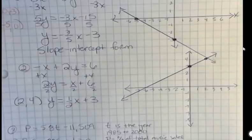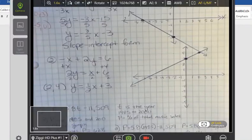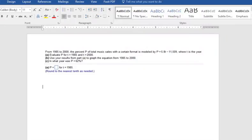The last one I want to show you is a problem from the Math Excel program that is just a little different. It says from 1985 to 2000, the percent P of total music sales with a certain format is modeled by this formula: P equals 5.8T minus 11,509, where T is the year. Evaluate P for T is 1985 and T is 2000. Use your results to graph the equation, and then in what year was a percentage equal to 62 percent.